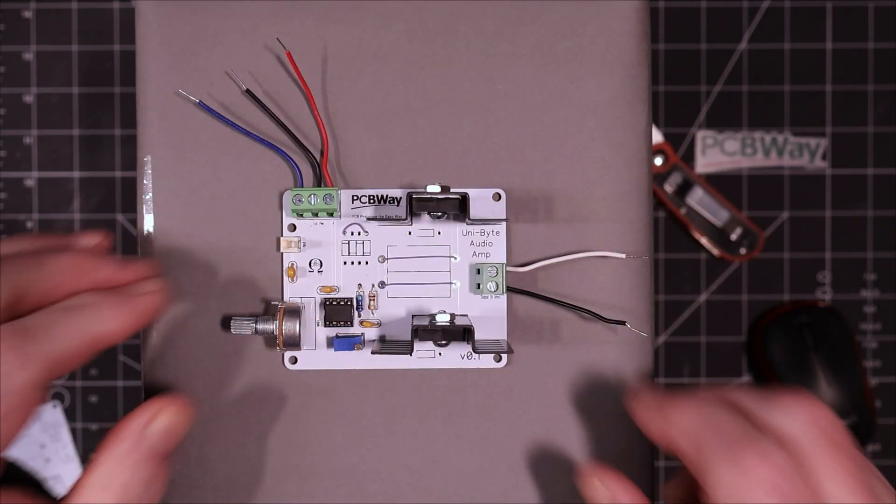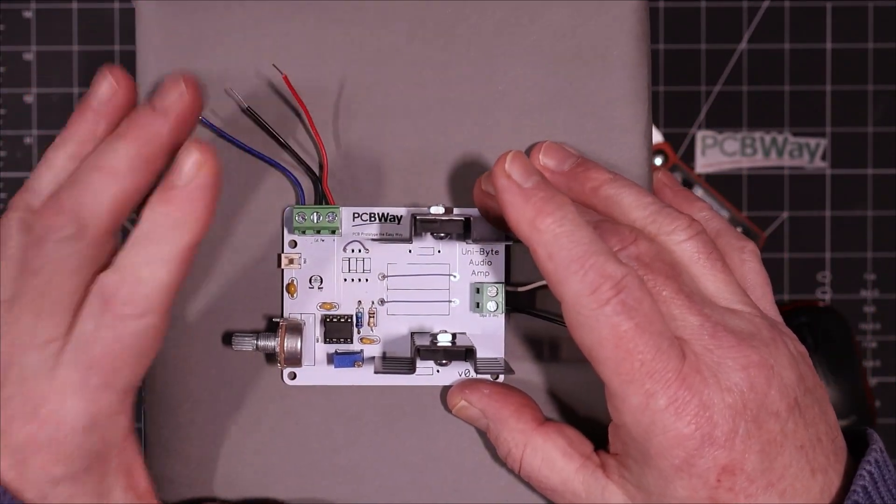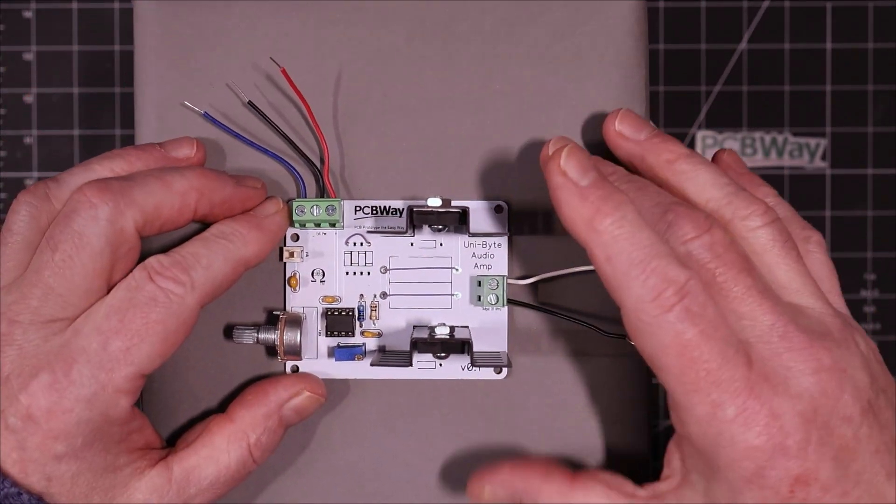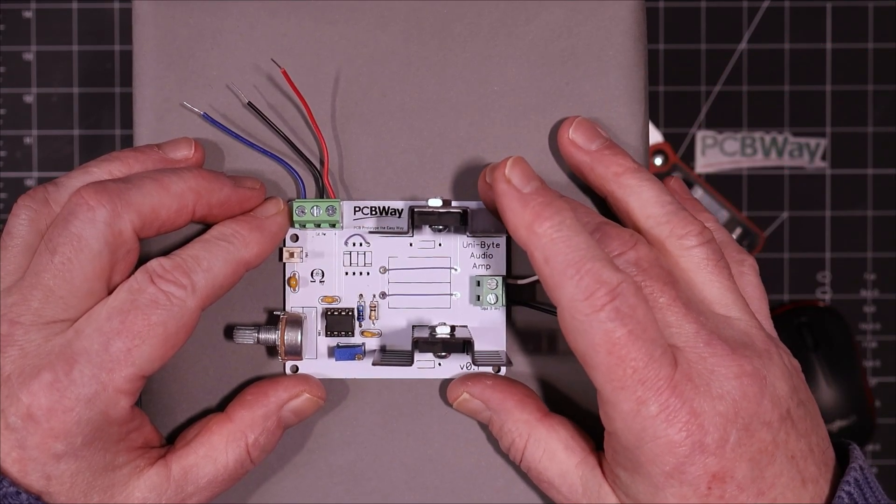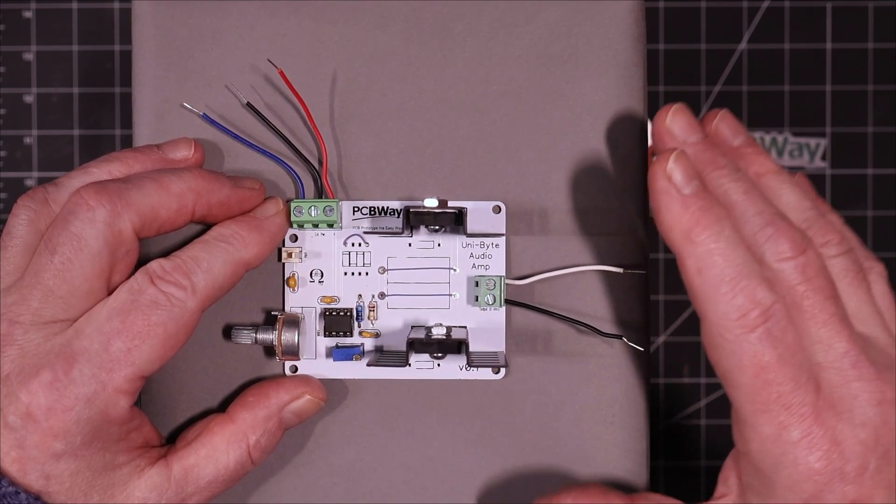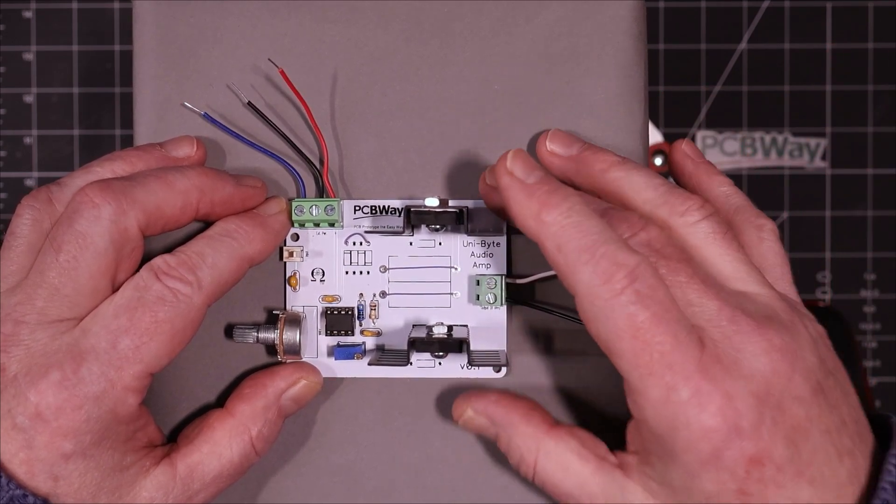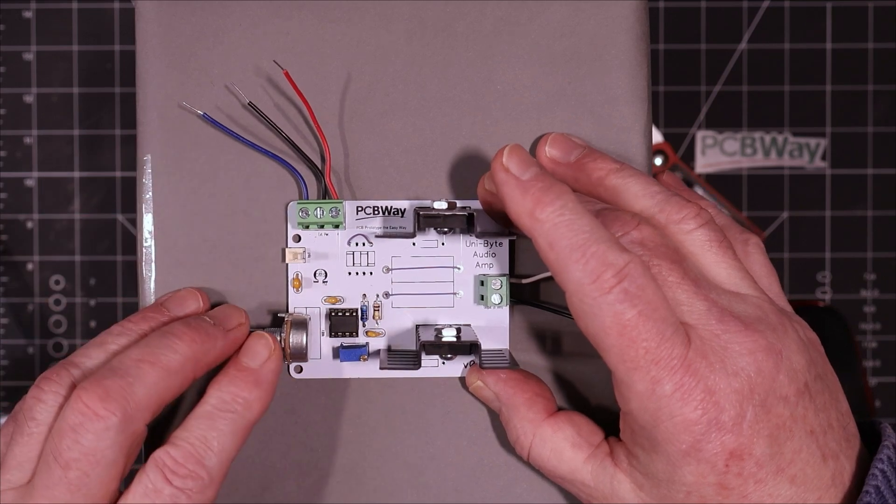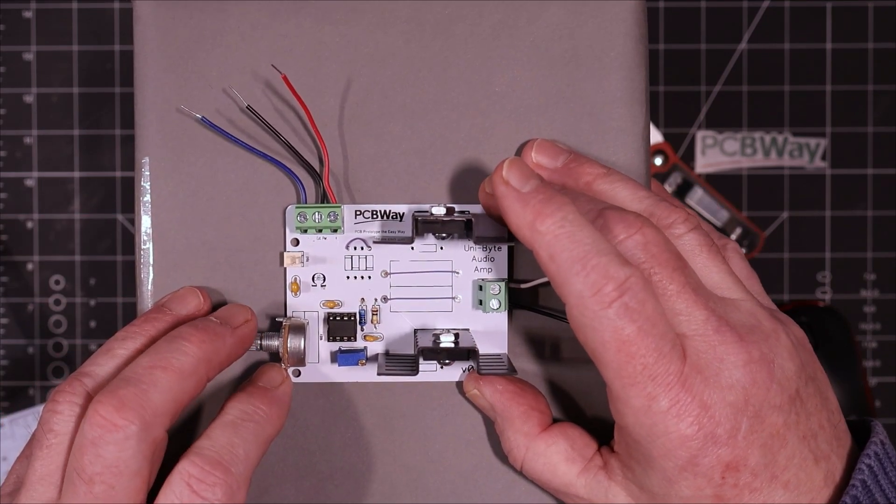Alright here we are. I've got these heat sinks on here, these should be enough. With plus and minus 15 volts going into this, I'm imagining we're going to get out maybe about 20 volts peak to peak before clipping, and into 8 ohms that should give us approaching 10 watts. That will be enough for our little guitar amplifier right now. Let's hook this up and test some of this stuff out.